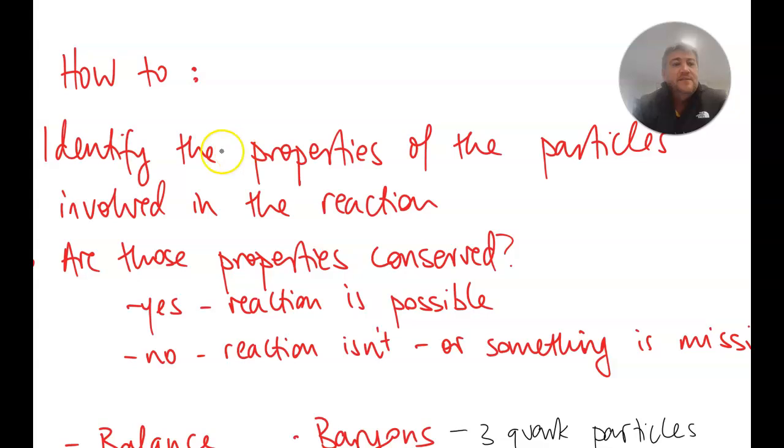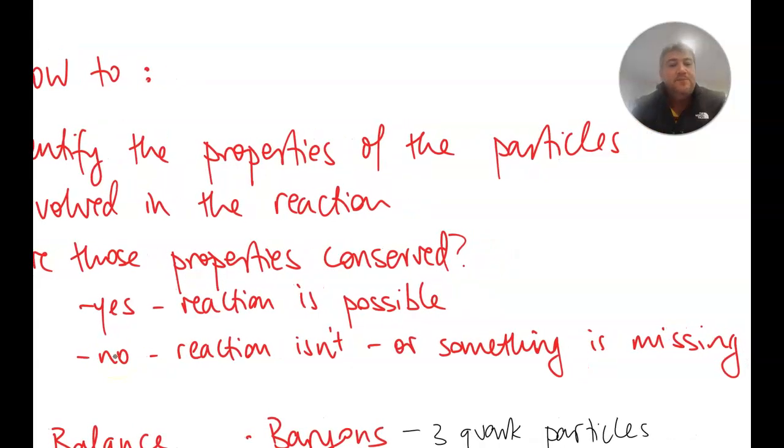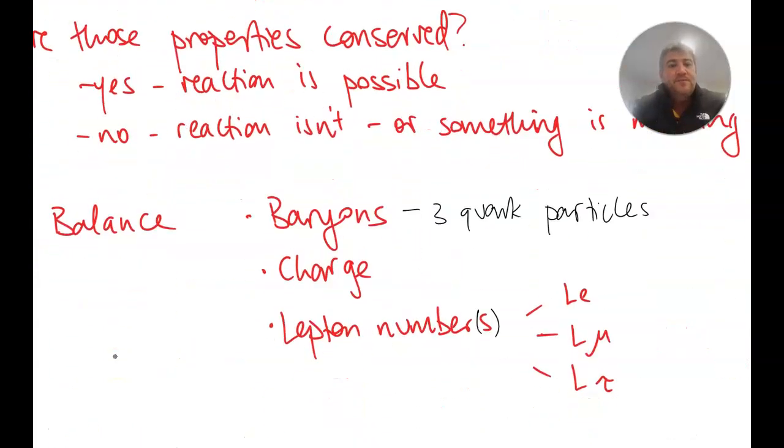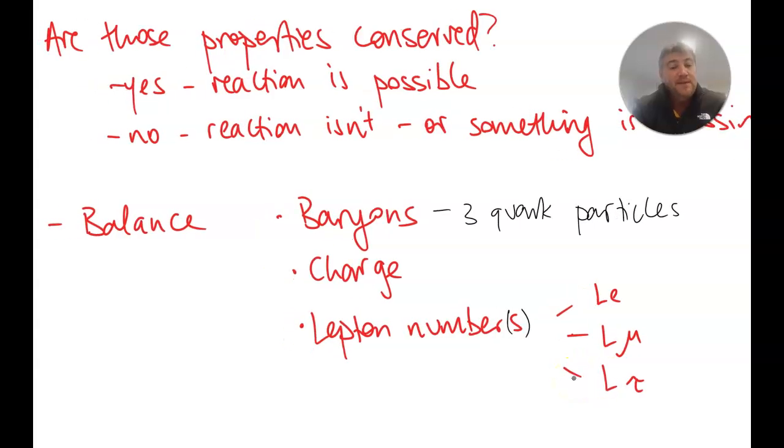So how to do these things? Identify what's going on. Identify the properties that are involved. Are those properties conserved? Yes or no, they should be. So if you're given reactions and you have to fill in the blanks, just assume it's conserved, it will be a real one. Or is this reaction possible? Go through the baryon numbers, the charge, the lepton numbers, so the individual electronic lepton, the muonic lepton numbers, and the tau lepton numbers, and find out whether they balance. You'll be able to fill in the missing jigsaw puzzle pieces based on the information that you've got in front of you.